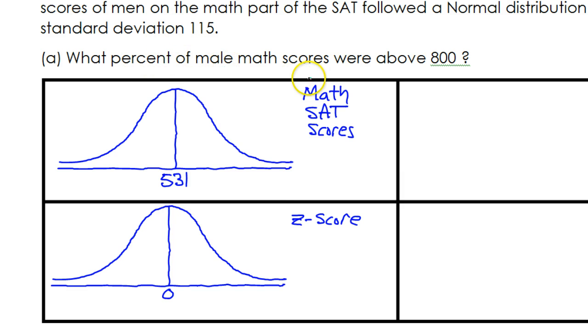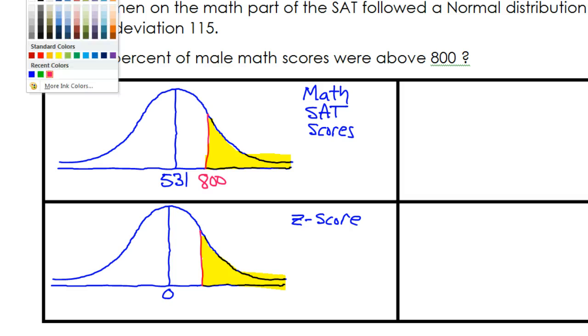What percent of male math scores are above 800? 800 is going to be somewhere to the right of this, so I will just come over here, put a line and call it 800. Put a similar line on my z-score graph. I will have to calculate that z-score to find it. Now we want to know above 800, so of course that is going to be to the right. Any time we are doing to the right, this is when we have to subtract from 100.